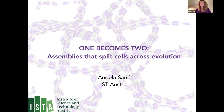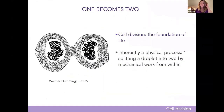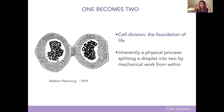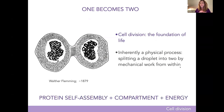Today I'll tell you a bit about our latest passion: thinking about the physical mechanisms of how one can make two out of one, in particular in the context of cell division. Cell division is the foundation of life — we are all one colony of a cell that divided a long time ago and kept on dividing. To us as soft matter physicists, this inherently physical process — how do you take a droplet and make two — has, across evolution, been done by a single strategy: protein assemblies coupled to a compartment and some energy source, because you need to produce work.